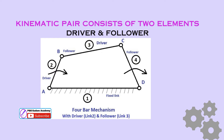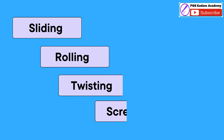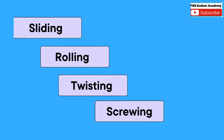The relative motion between the driver and the follower can be classified into different types, such as sliding, rolling, twisting, or screwing, depending on the nature of the connection.